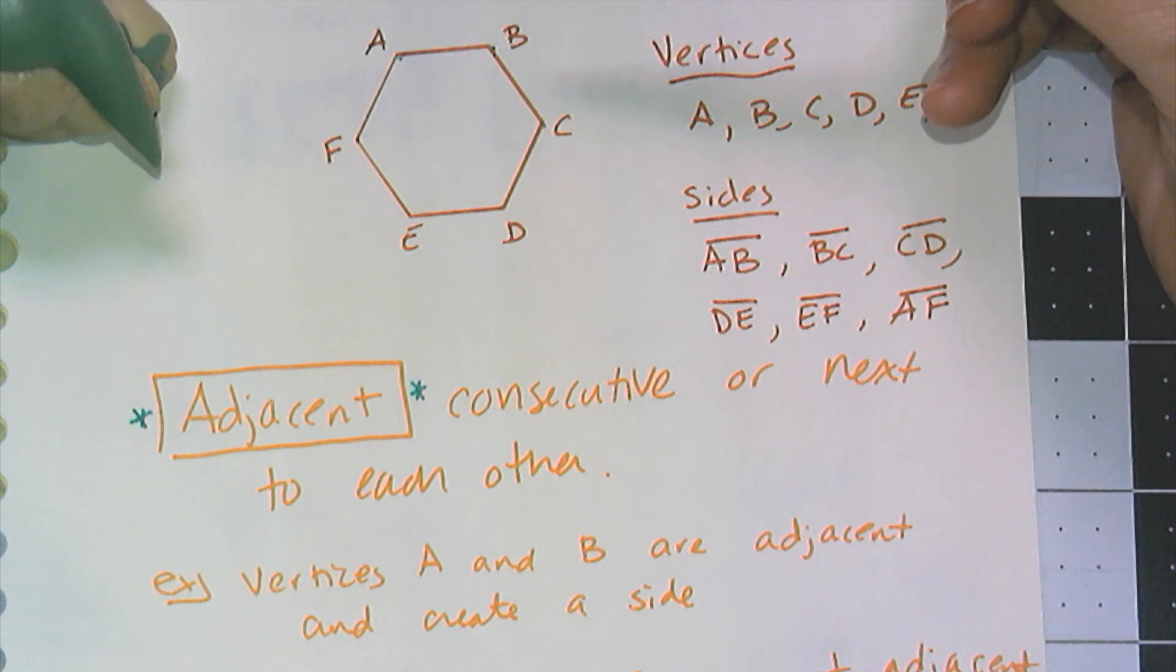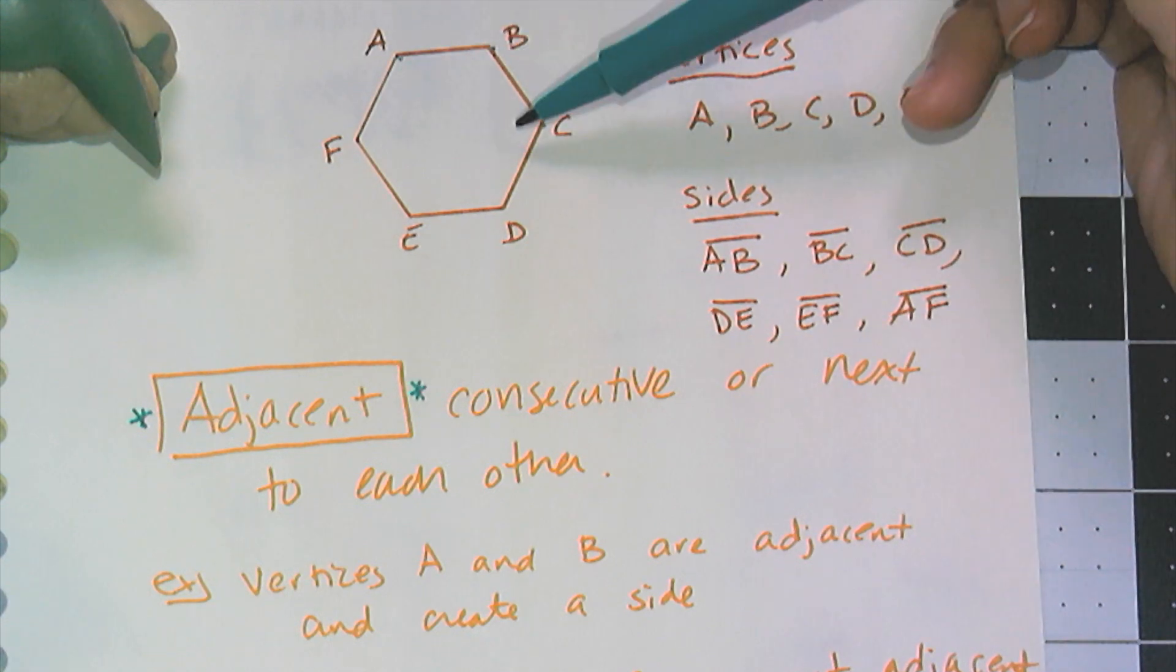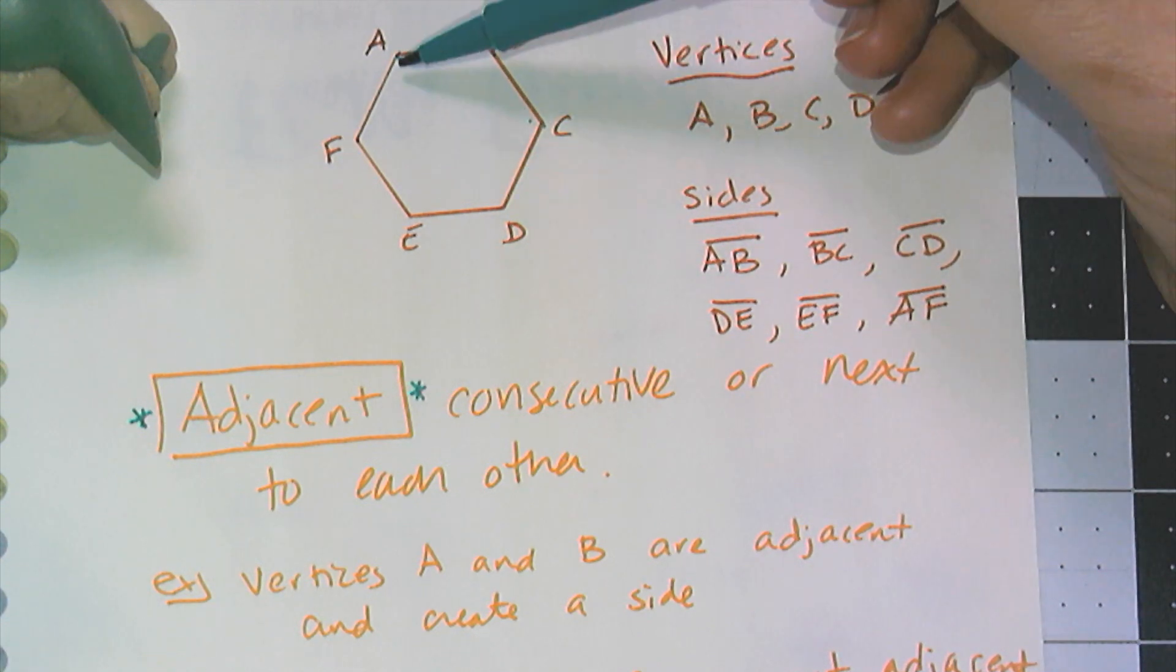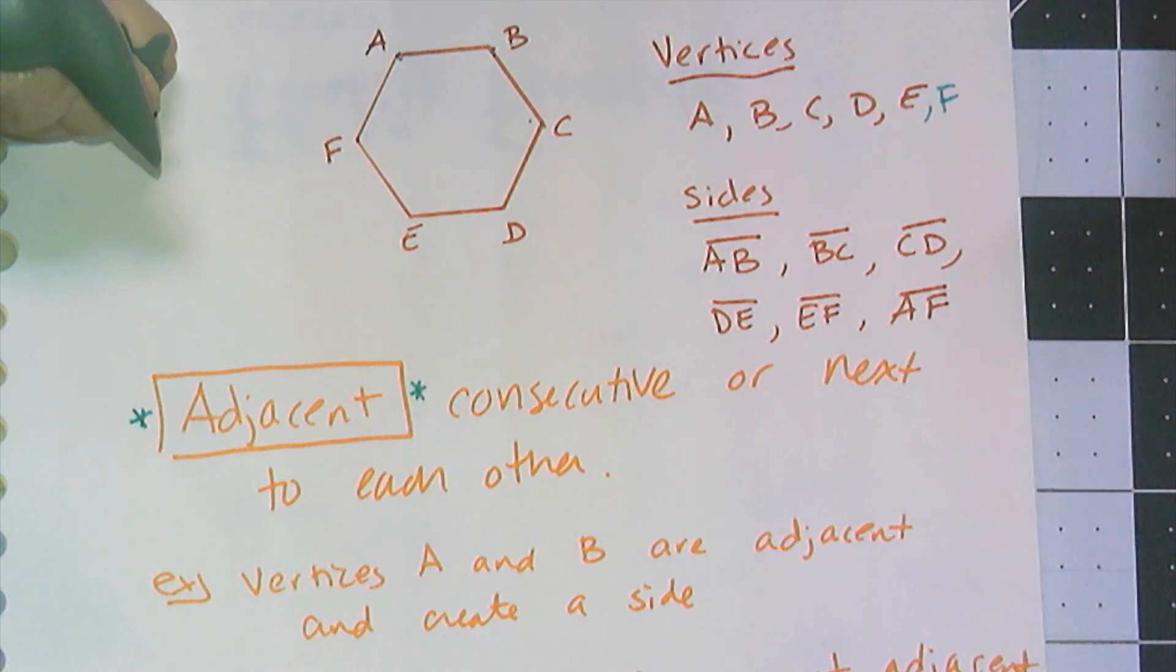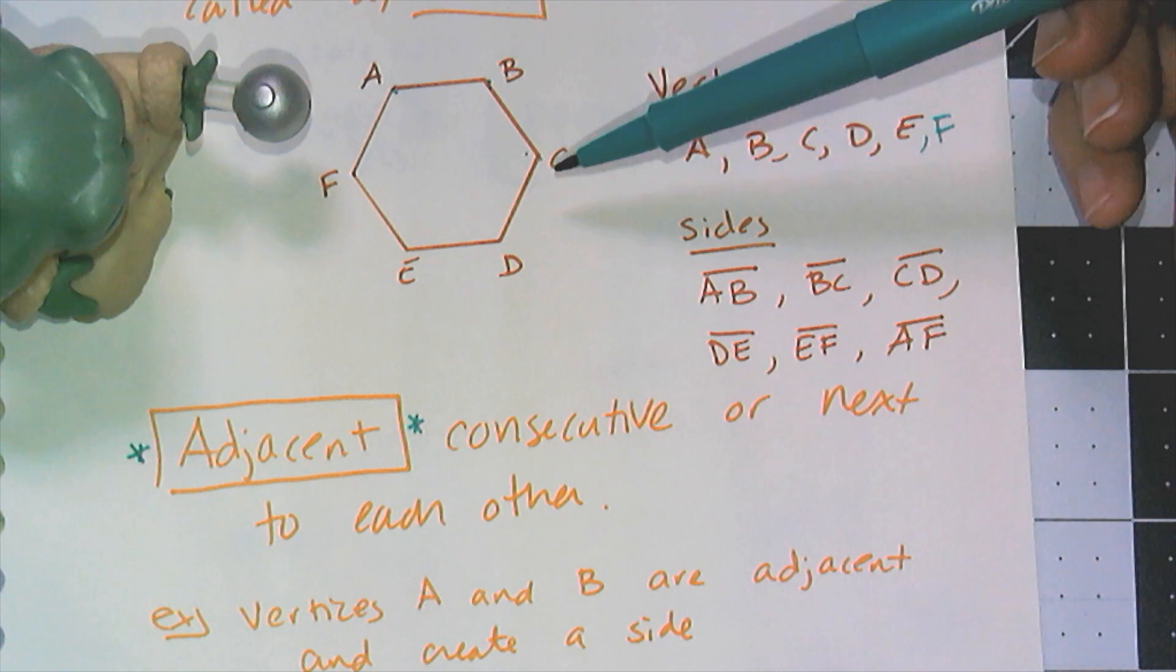Now non-adjacent vertices, for example, would be like A and C, A and D, and A and E. And if I drew those line segments in, they would create something called a diagonal.